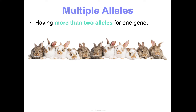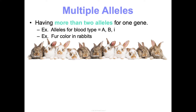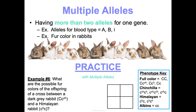Multiple alleles means having more than two versions — more than two alleles — for one gene. We mentioned this for blood type with A, B, and little i. Rabbit fur color is another example of multiple alleles. Practice problem: what are the possible fur colors of the offspring of a cross between a dark gray rabbit (C cch) and a Himalayan rabbit (ch c)? A key will always be provided to determine phenotypes from genotypes — you won't need to memorize which genotypes produce which rabbit colors.